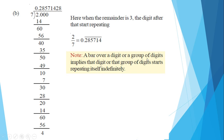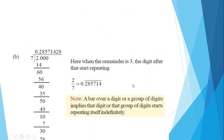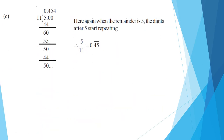A group of digits implies that the digit or group of digits starts repeating itself indefinitely. We can place a bar over the repeating digit or group. The remainder is 5, and the digits after that start repeating. The repeating block is 4, 5.